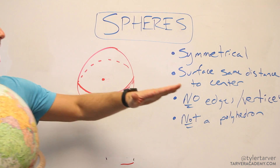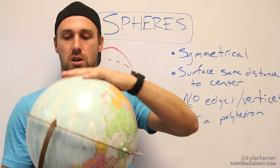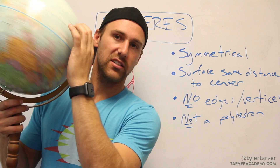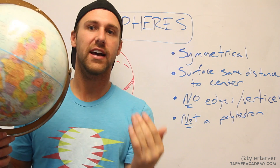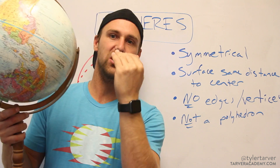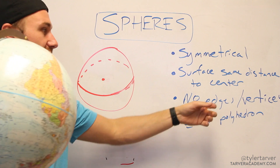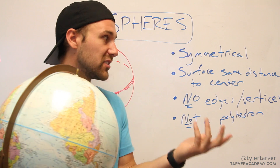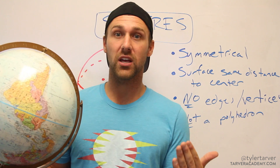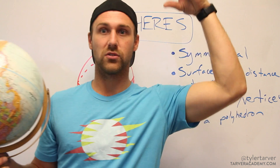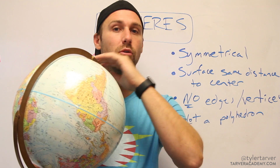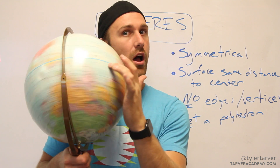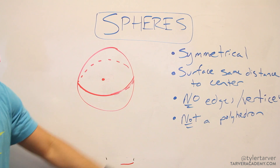Next, there are no edges or vertices. See how smooth that is when I spin it? There's nothing catching. If I did that to a Rubik's cube, I would catch every time one of those edges hit. A vertex is essentially a corner, like on a triangle or a triangular prism, where those angles happen. A sphere has no edges and no vertices — no pointy parts. It's perfectly spherical.